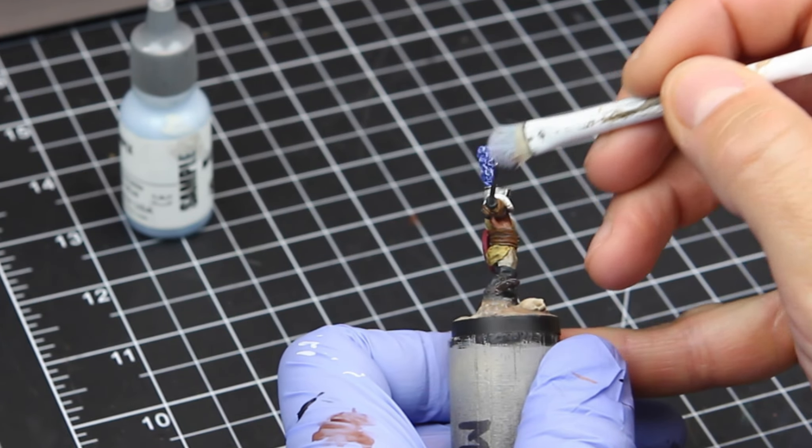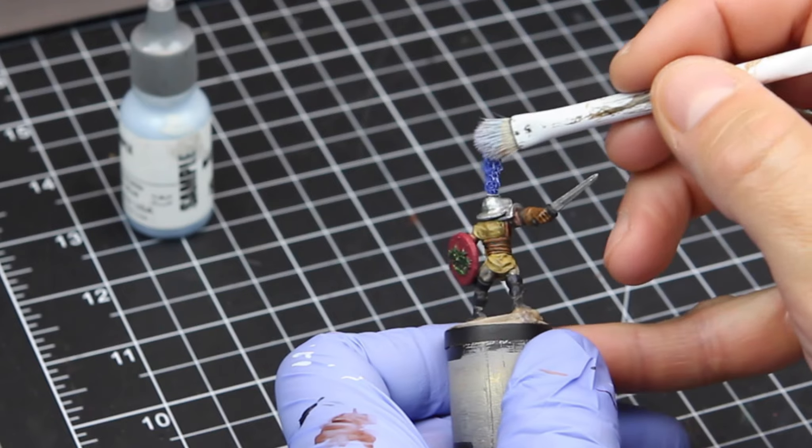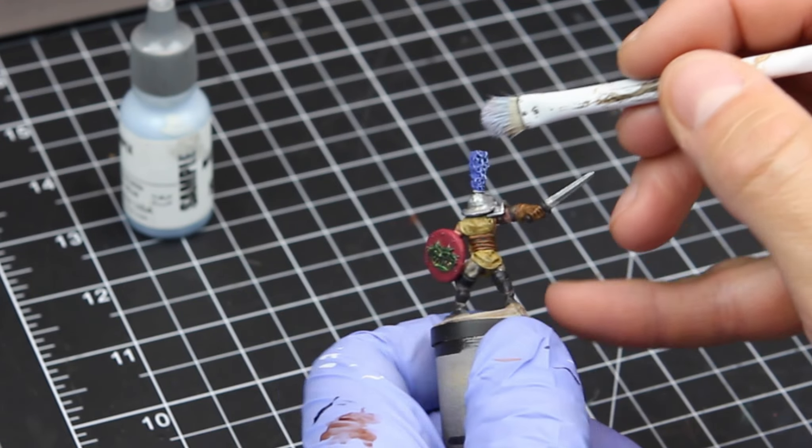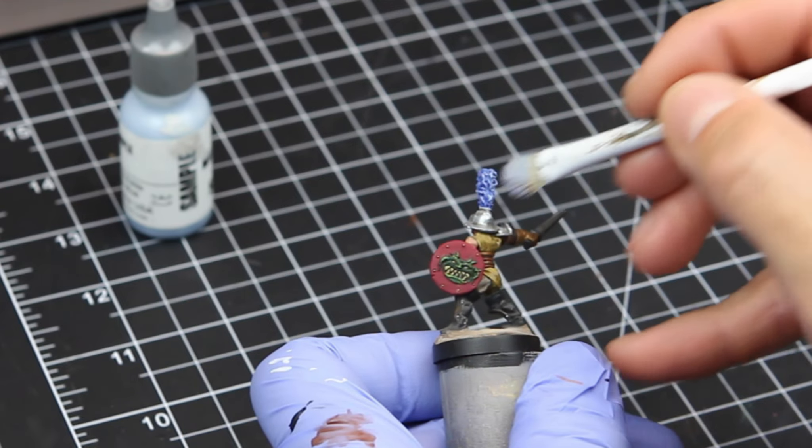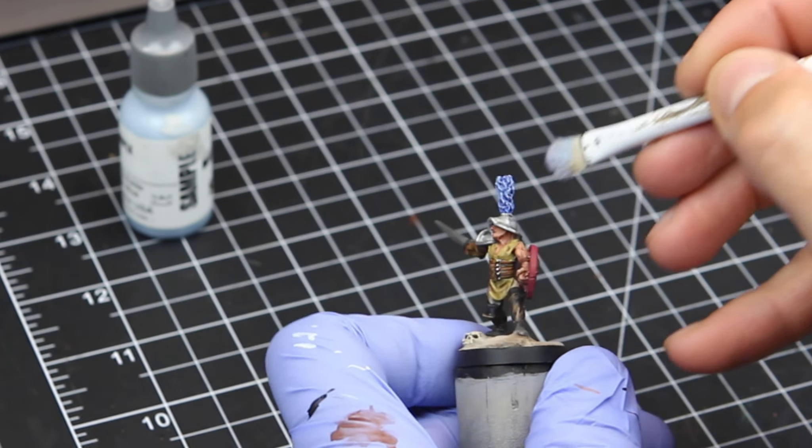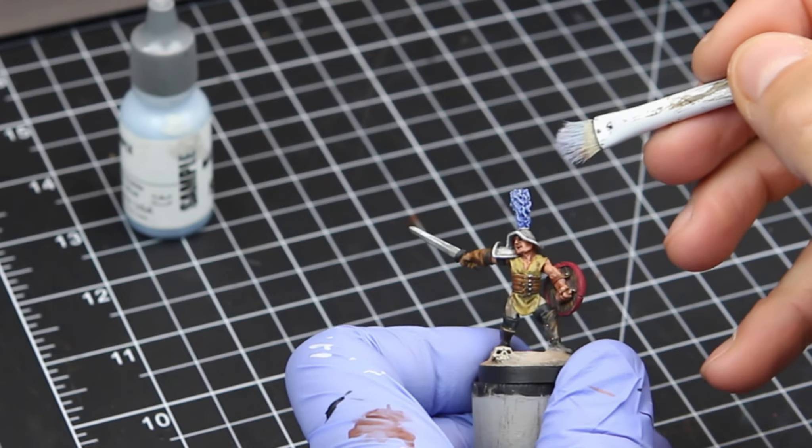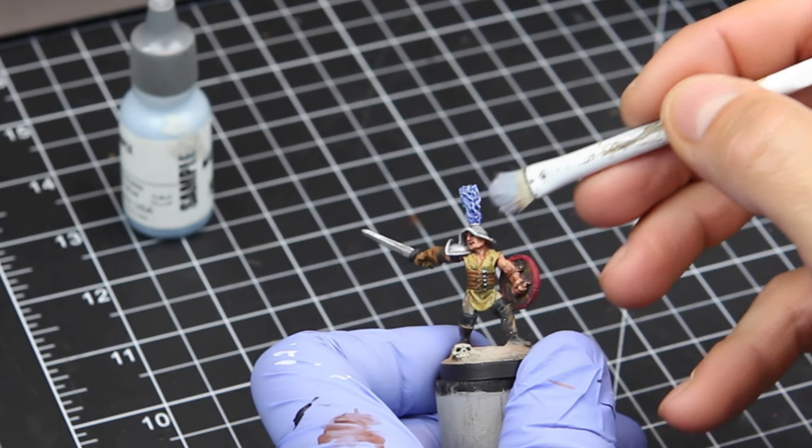Now I have probably close to 90-95% of the paint off of this brush. And I'm just brushing very lightly across the grain of the plume. It's a really good technique when you're working with any type of chain mail, fur, stuff like that.